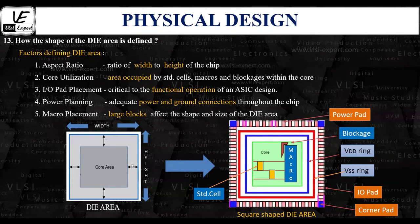The die area's size and shape are defined by the width and height dimensions. The die area comprises the core area, which includes the logic of the design such as the standard cells, macros, and other functional blocks. Surrounding the core region, the die area contains the core power ring, which includes the VDD ring and the VSS ring.